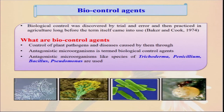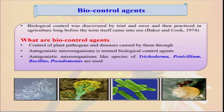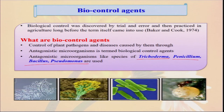Now, I am coming to the biocontrol agents. What are the biocontrol agents? They are some types of different microorganisms when they help to attack other harmful insects and ultimately reduce their population and enhance our yield. So we should very much use this type of biocontrol agent in our organic farming. The different types of biocontrol agents include: control of plant pathogen diseases by antagonistic microorganisms like Trichoderma — the most popular biocontrol agent used in India. We can use Penicillium, different types of Bacillus, and Pseudomonas. These different types of bacteria present always help to control the harmful insects and other diseases.